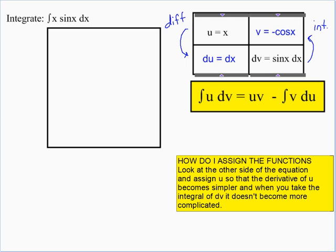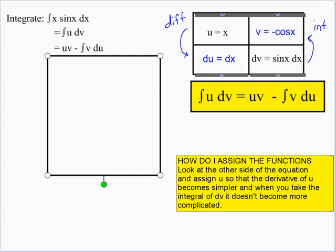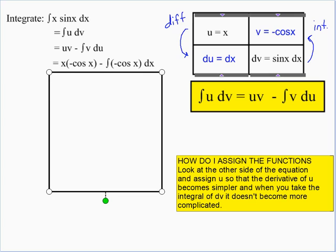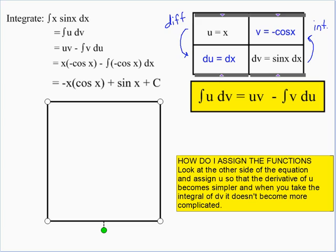Now we make our substitutions into the formula: the integral of u dv equals u times v minus the integral of v du. So u equals x, v equals negative cosine x, minus the integral of v (negative cosine x) times du (dx). Multiplying gives negative x cosine x. We have a negative constant, so we can bring that out which makes it plus in between, and the integral of cosine x is simply sine x. Adding plus C, the integral of x sine x dx equals negative x cosine x plus sine x plus C.